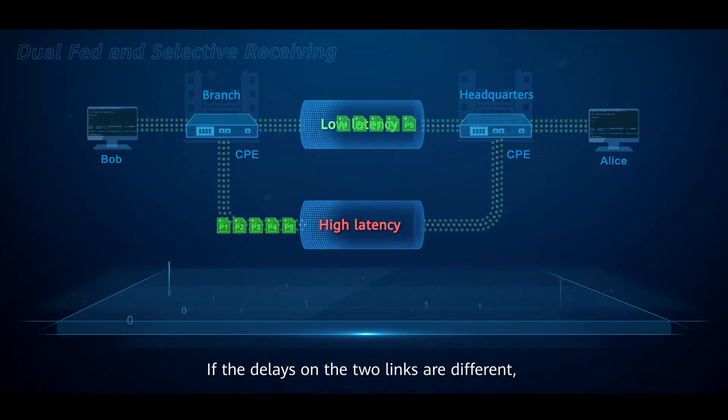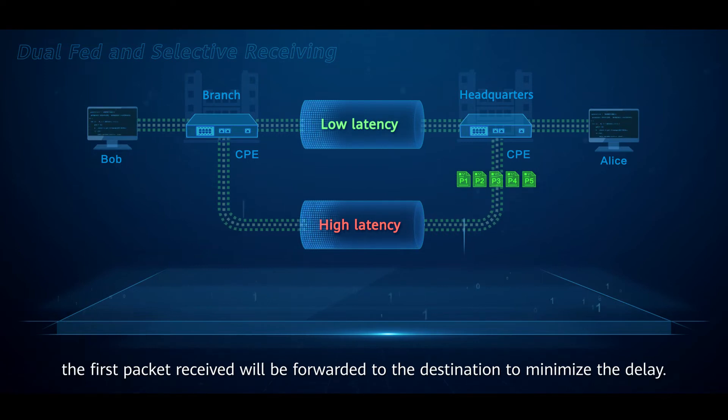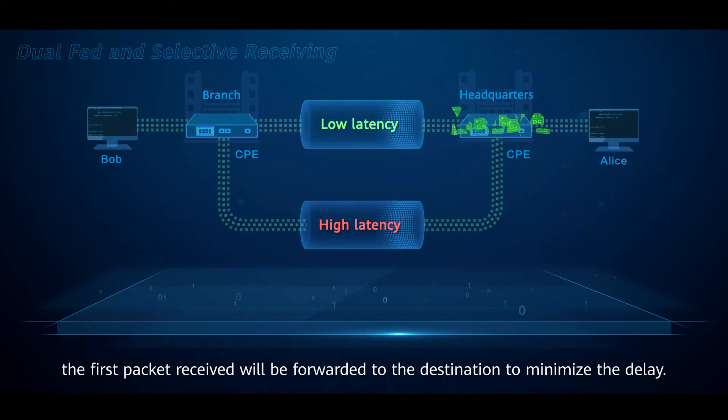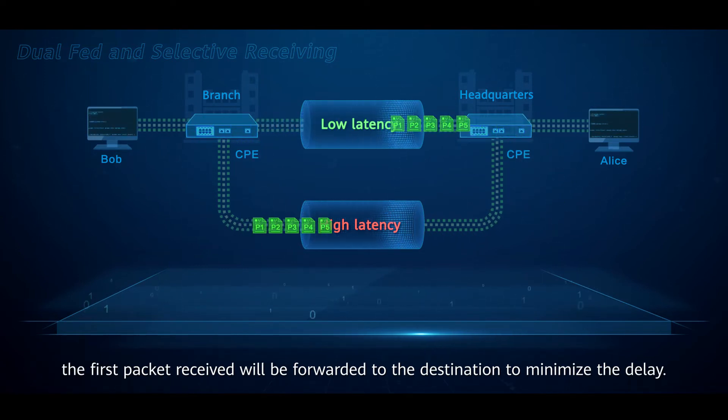If the delays on the two links are different, the first packet received will be forwarded to the destination to minimize the delay.